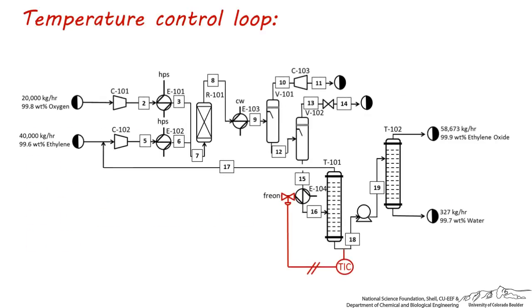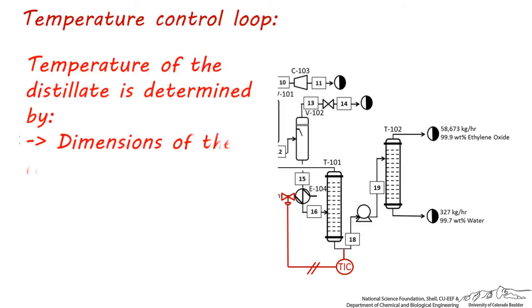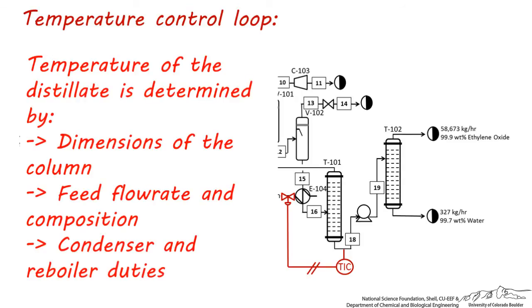Let's look at another example. Will this control loop adequately control the distillate stream temperature? Probably not, because you might remember from previous lectures that the temperature of the distillate and bottoms is determined by the design dimensions of the column, the feed flow rate and composition, and the condenser and reboiler duties. All of these factors are responsible for the temperature of the distillate stream. Distillate temperature is determined by the distillate concentration and condenser duty more than anything else, and therefore it can be difficult to control.